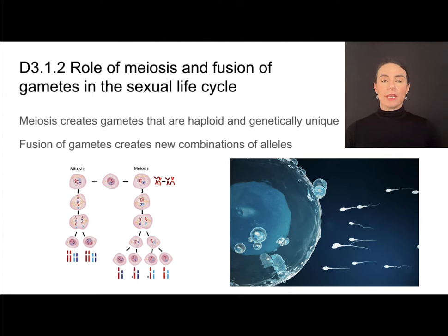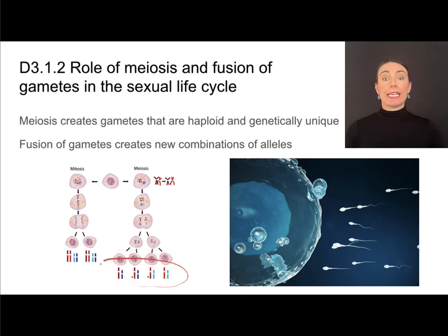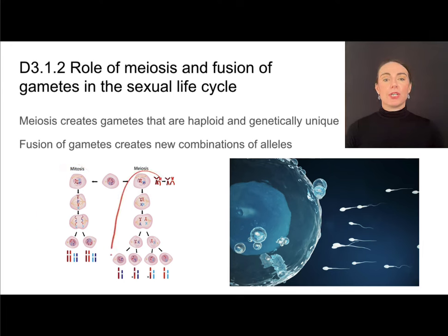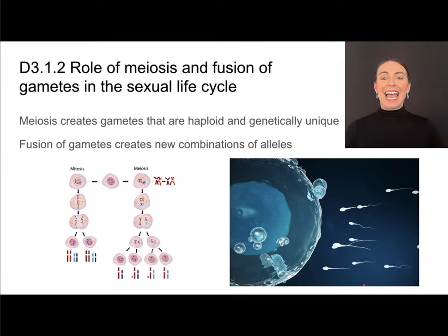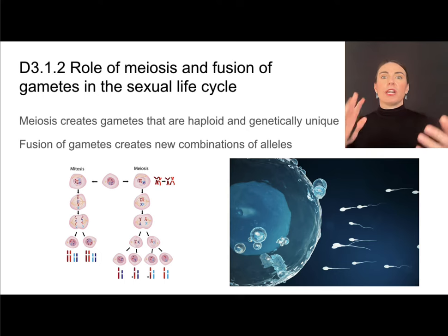Meiosis is covered more in depth in another topic, but just to review: this is the process of creating gametes, and it produces four haploid cells. Each of these cells is genetically unique. Unlike mitosis, which illustrates continuity, meiosis illustrates change because all cells produced are genetically unique. Each cell being unique, and the fact that only one out of many cells will fuse in fertilization, creates the opportunity for lots of different combinations of alleles to exist in the offspring.